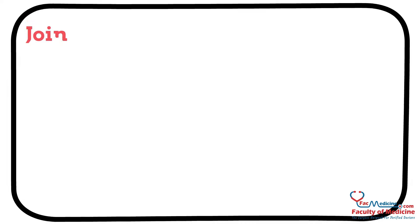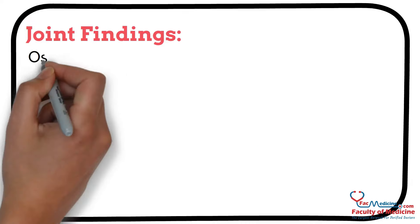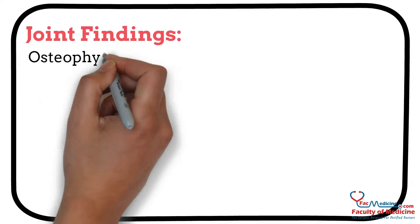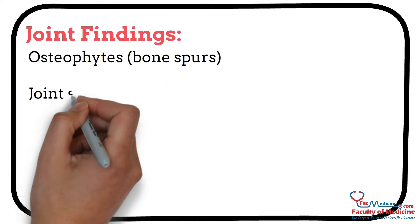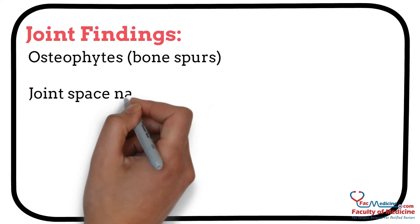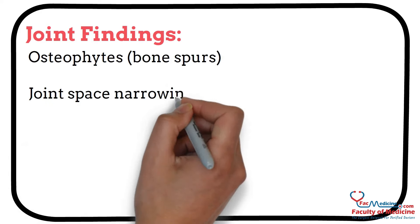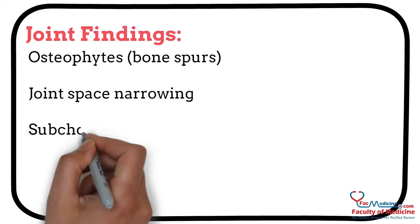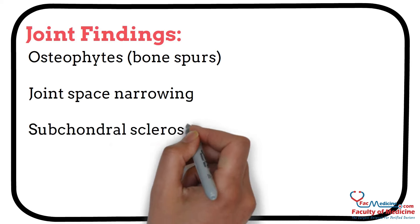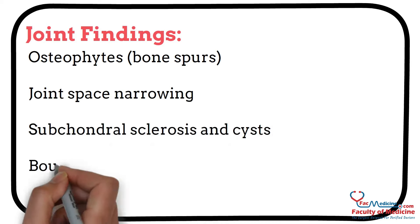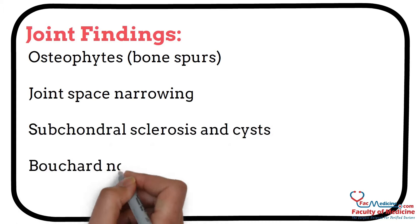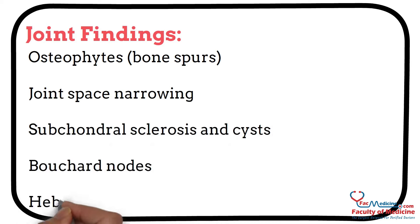Joint findings include osteophytes or bone spurs, joint space narrowing, subchondral sclerosis and cysts, Bouchard nodes, and Heberden nodes.